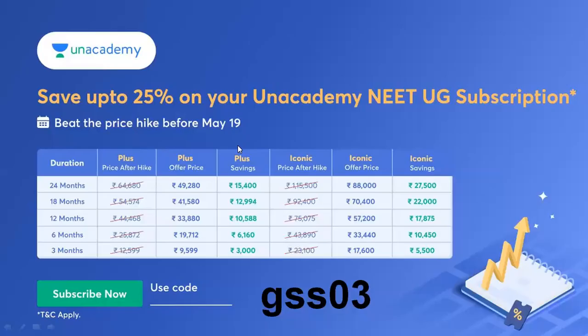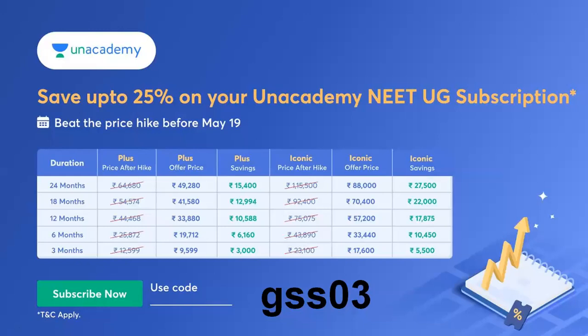If you have a small information regarding Unacademy, you can save 25% for Unacademy subscription. You can beat the price hike before May 19th. After the prices hike on May 19th, you can get to the price hike. Please do take the Unacademy subscription before May 19th.